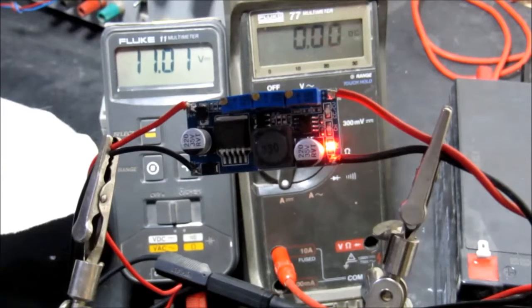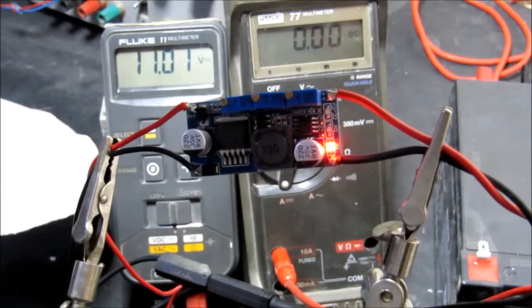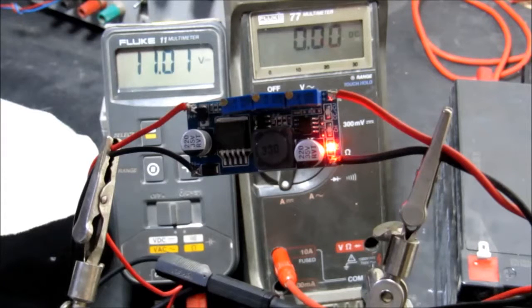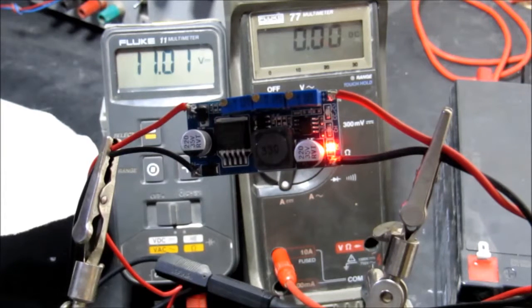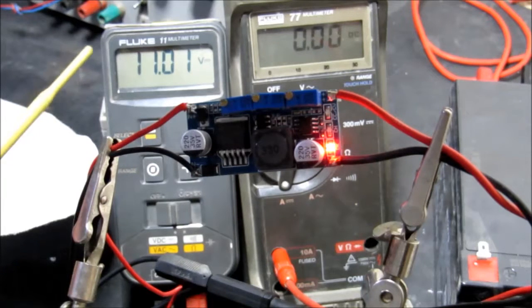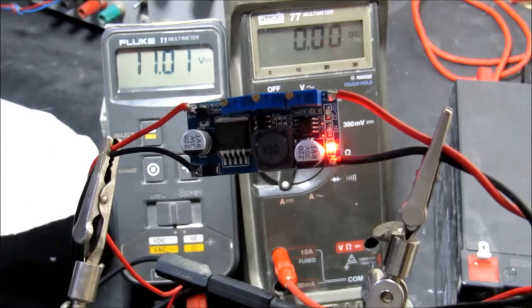Hello, today I'm going to take a look at one of these voltage regulators with constant current and constant voltage adjustment. It's based on the LM2596, a very popular IC. On the meters here we've got the output voltage and the output current, no current flowing at the moment.